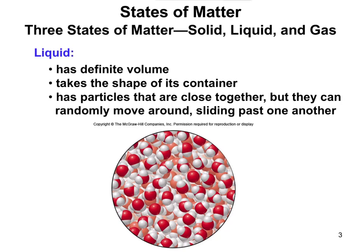For a liquid, it has particles that are still pretty close together, but they can randomly move around, and that allows it to change its shape. If you look at the particles at the bottom of this slide, you can notice that they are not as fixed or as rigid, and they can move and slide more than they could in a solid.